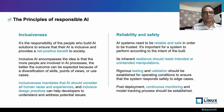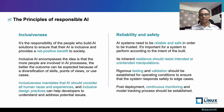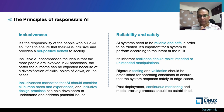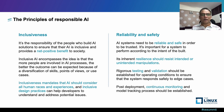Coming to inclusiveness: it is the responsibility of the people who build AI solutions to ensure that AI is inclusive and provides a net positive benefit to society. Inclusiveness means helping the ecosystem where possible — for example, speech-to-text, text-to-speech, and visual recognition technologies should be used to empower people with hearing, visual, and other impairments. Inclusiveness is a mandate and should consider all human races and experiences, and inclusive design practices can help developers understand and address potential issues.